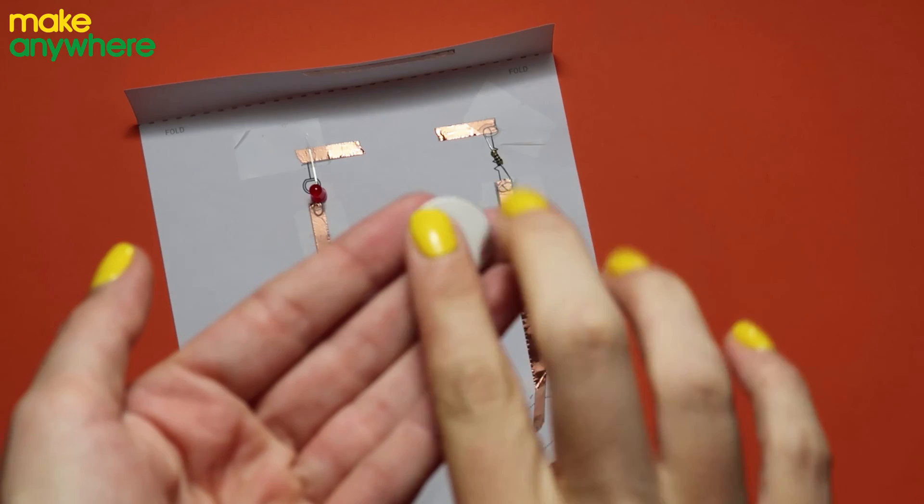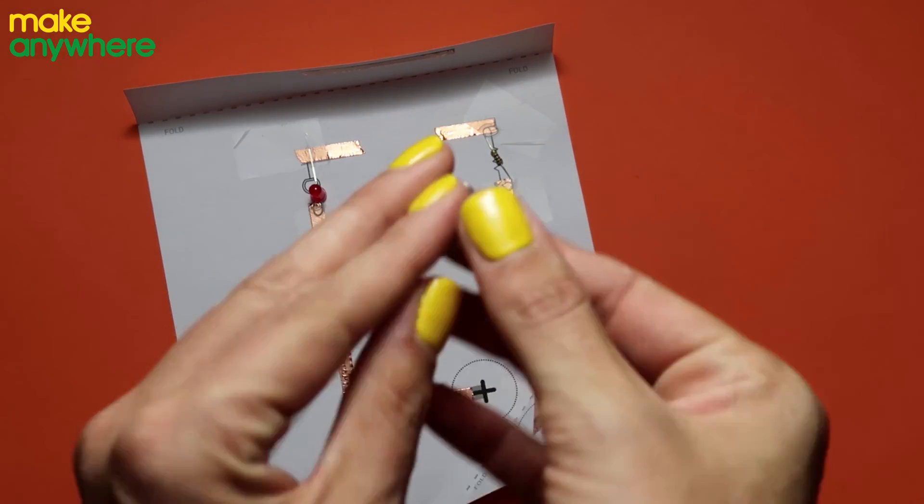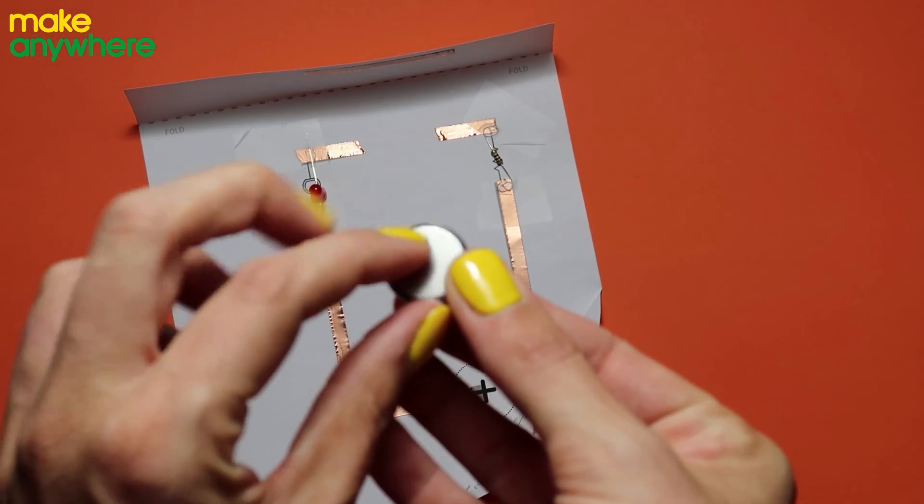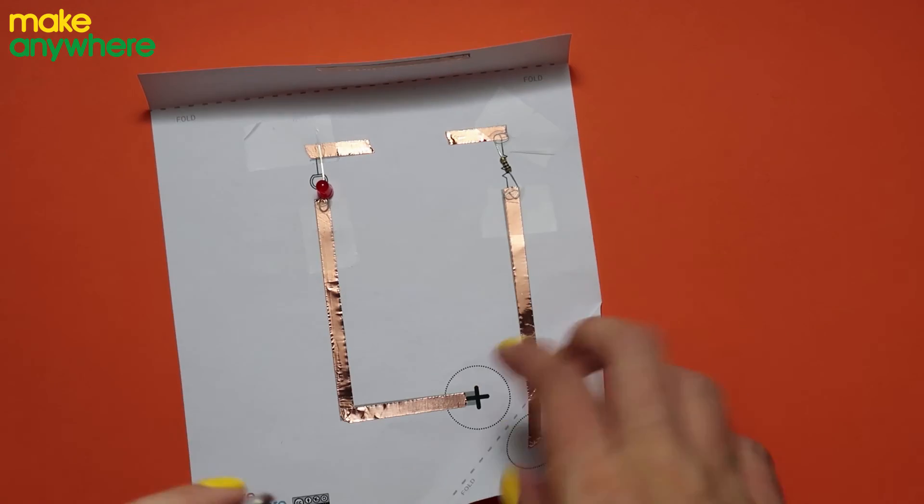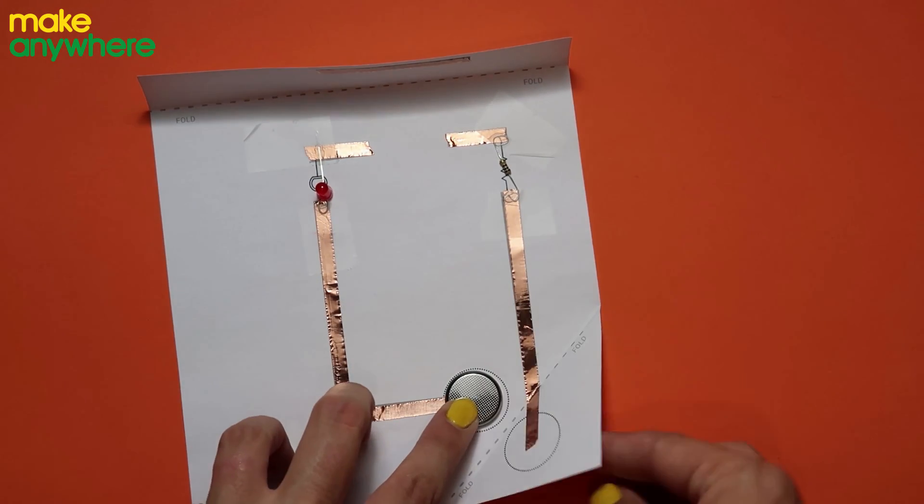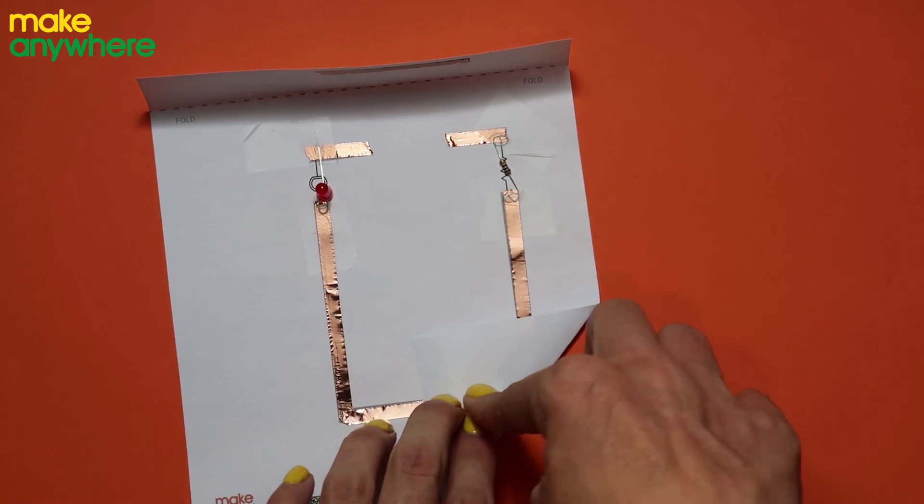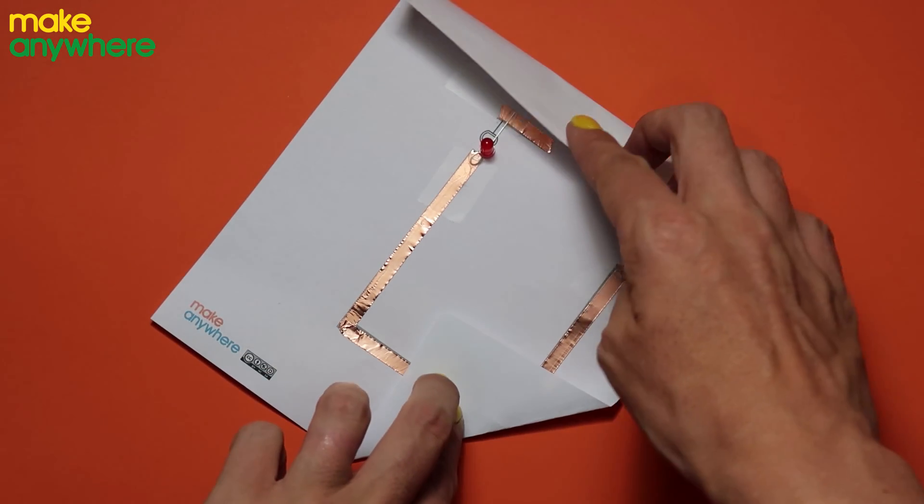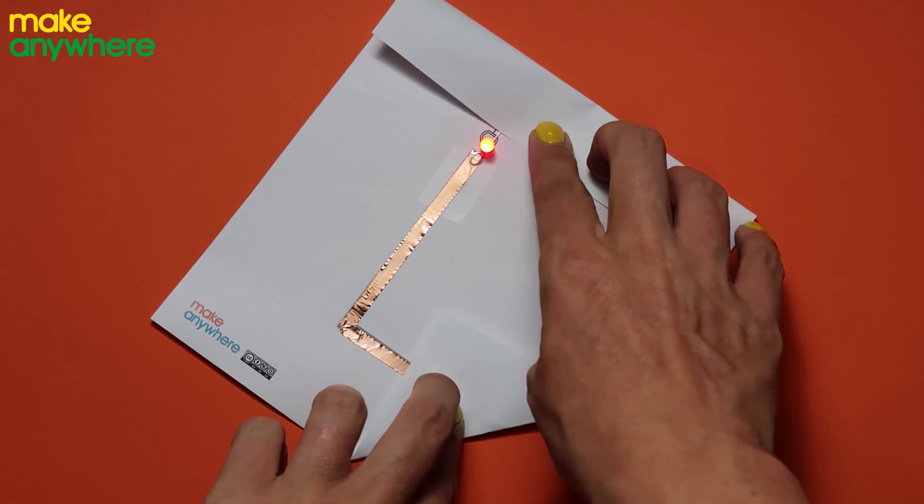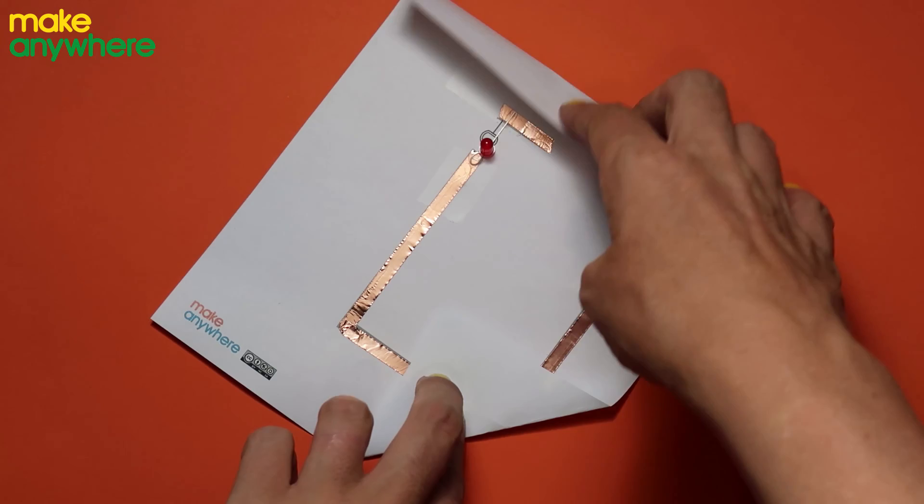Take your cell battery. Now the shiny side is the positive and the bumpy rough side is the negative so I'm going to go shiny side onto the plus. Folding my negative over and then when I touch down my LED will light out. Great!